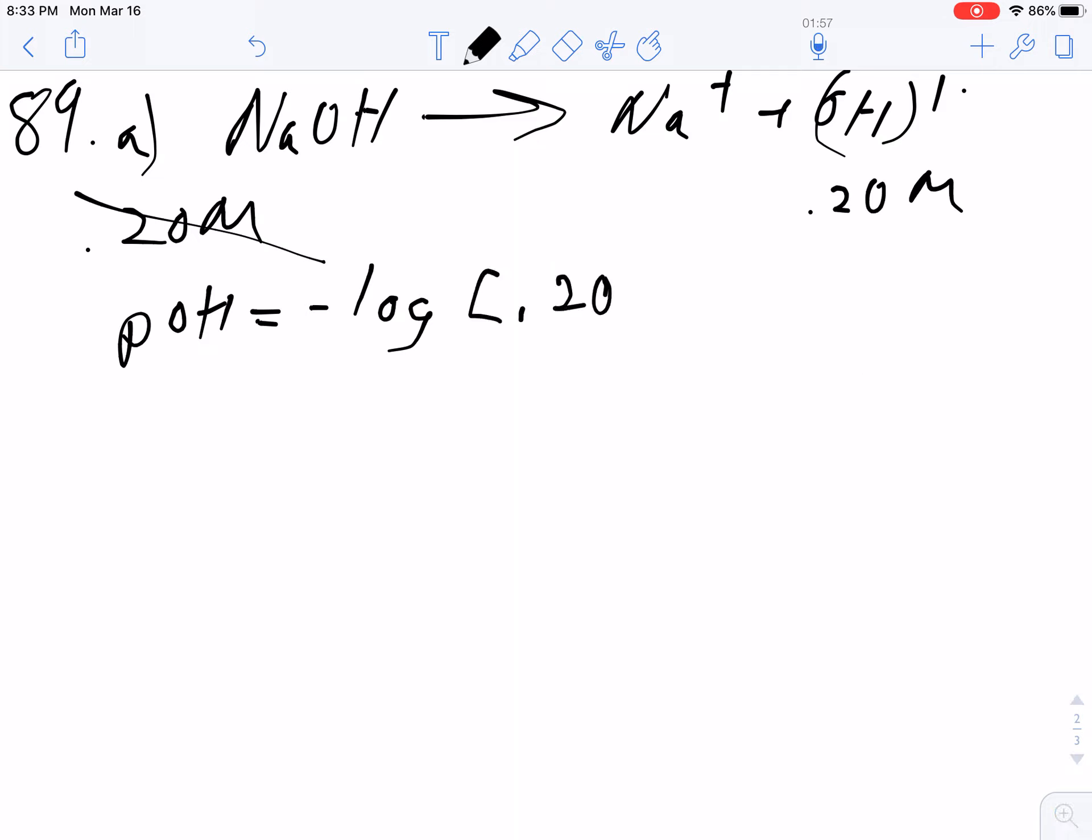The pOH is going to be negative log of the concentration of 0.2 molar, which means the pOH will be the log of 0.2, which is 0.6, or with sig figs, 0.70. Then, because pH plus pOH equals 14, my pH will be 13.3.